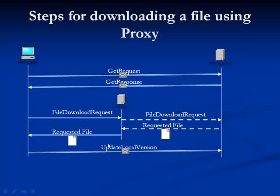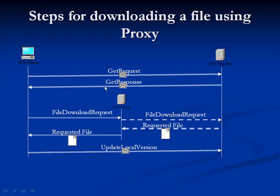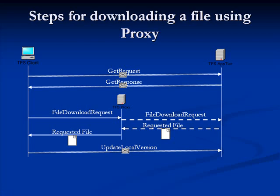Once the client receives the file, it's going to send what we call an 'update local option' operation. This is to say that the client has successfully received this version of the file — more like an acknowledgement back to the server. As you can see in this picture, all the metadata exchange takes place directly between the client and the application tier. Only the actual file download goes through the proxy. The proxy itself doesn't store any metadata; it just caches multiple versions of files.